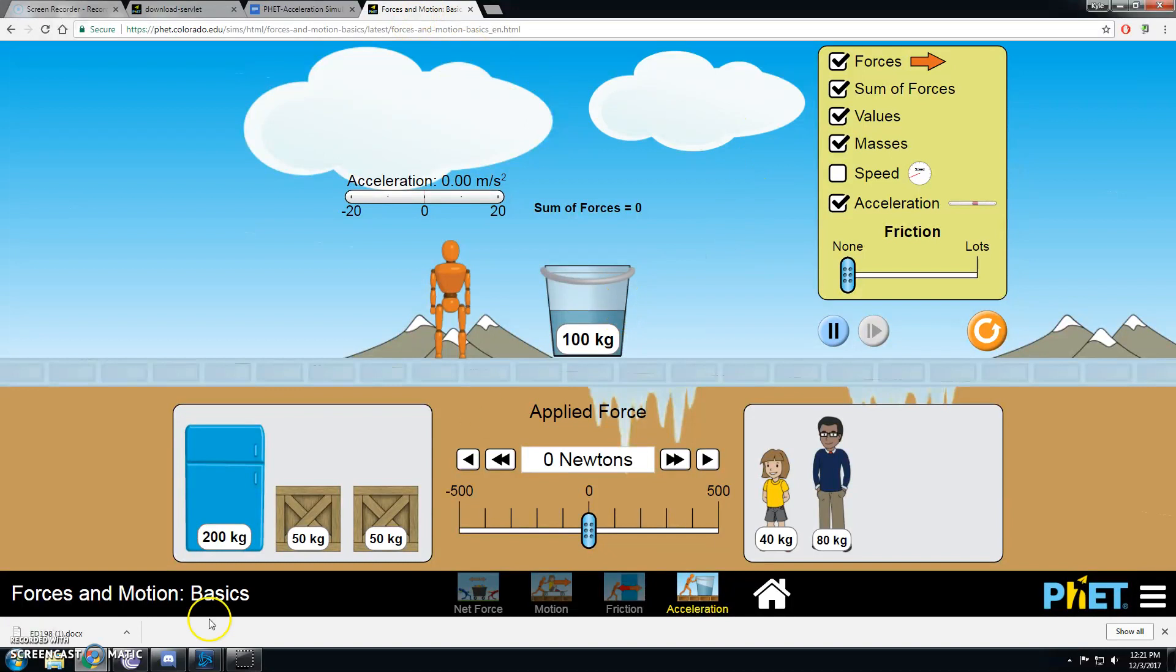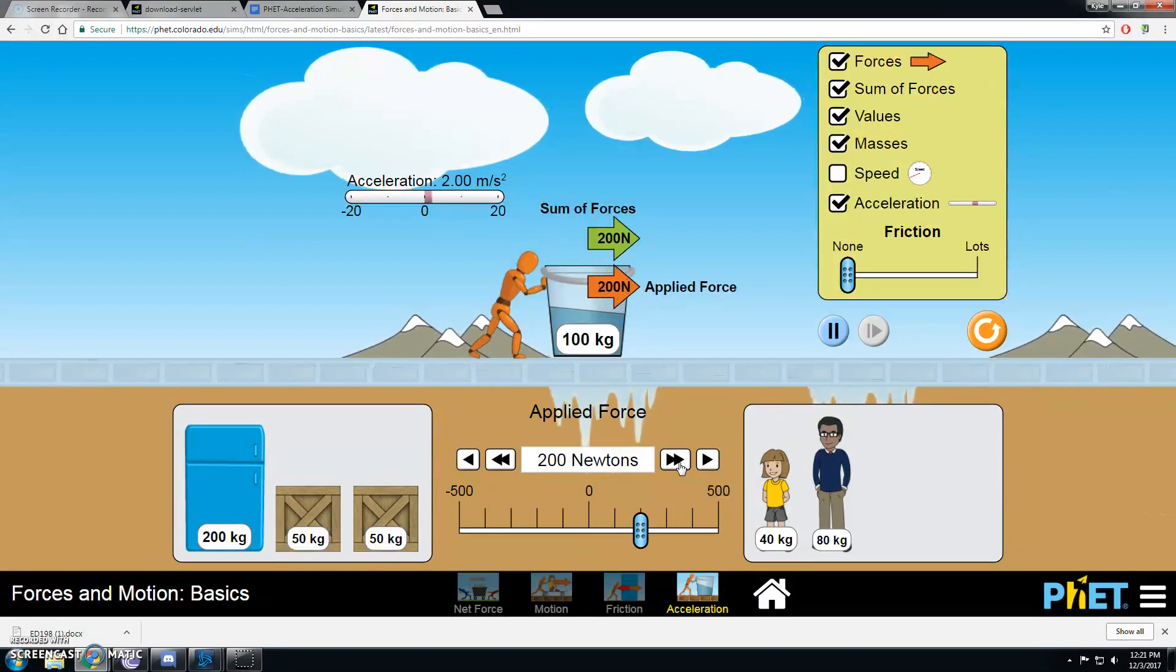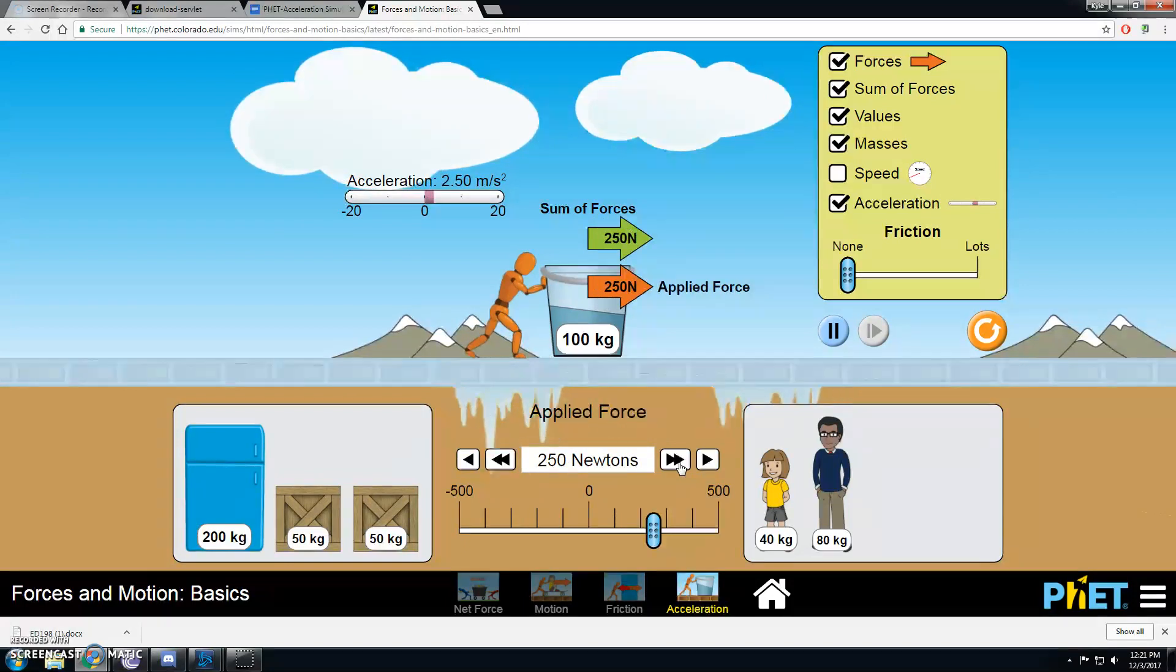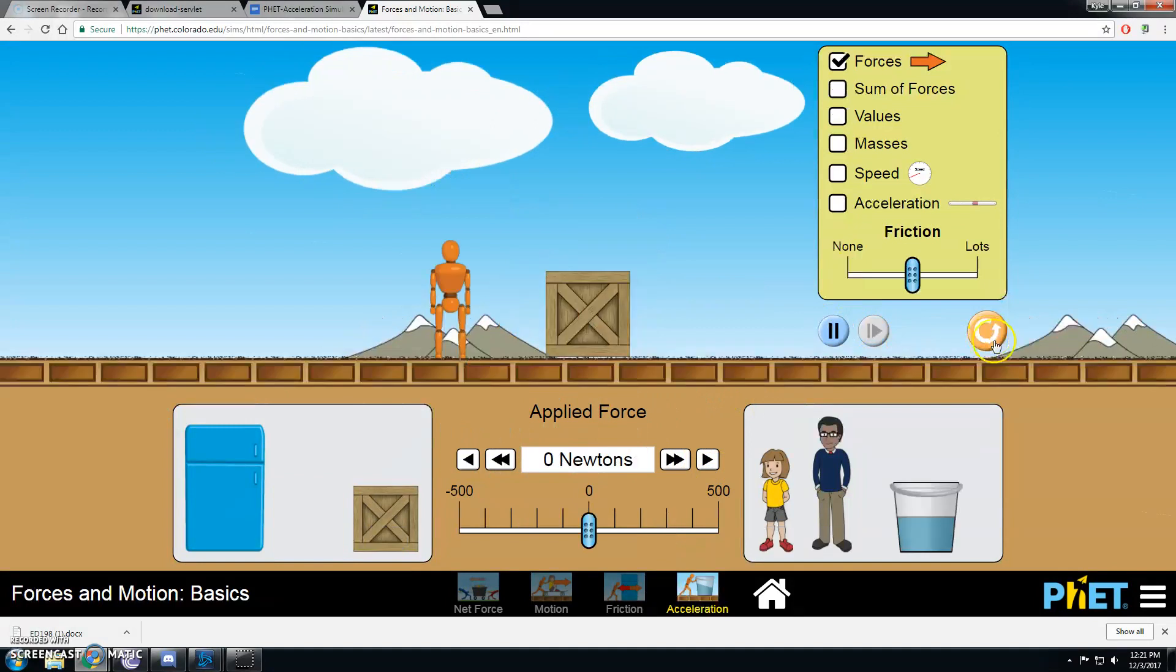So here we go. Now what we need to do is apply different forces to our bucket, which is right here. I like to use these double arrows right here because it increases the applied force by 50 newtons every single time. We like to keep it nice and consistent across all of our trials so we can hopefully see a nice relationship.